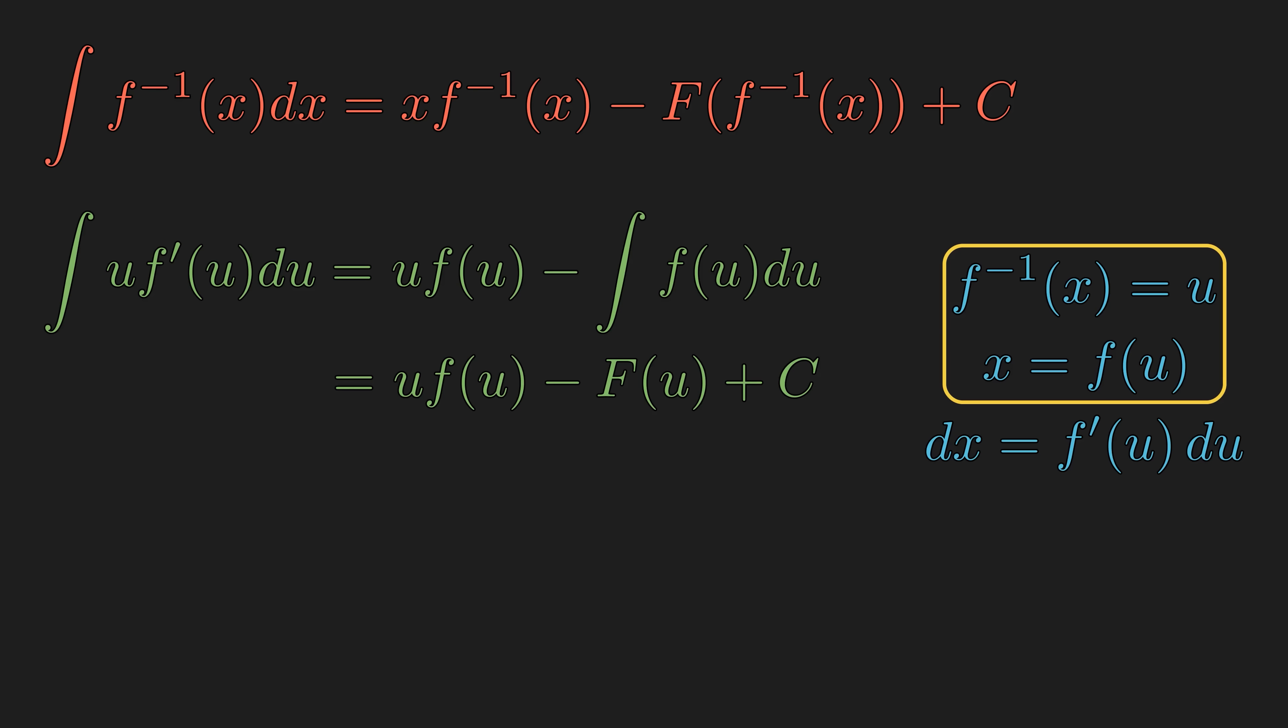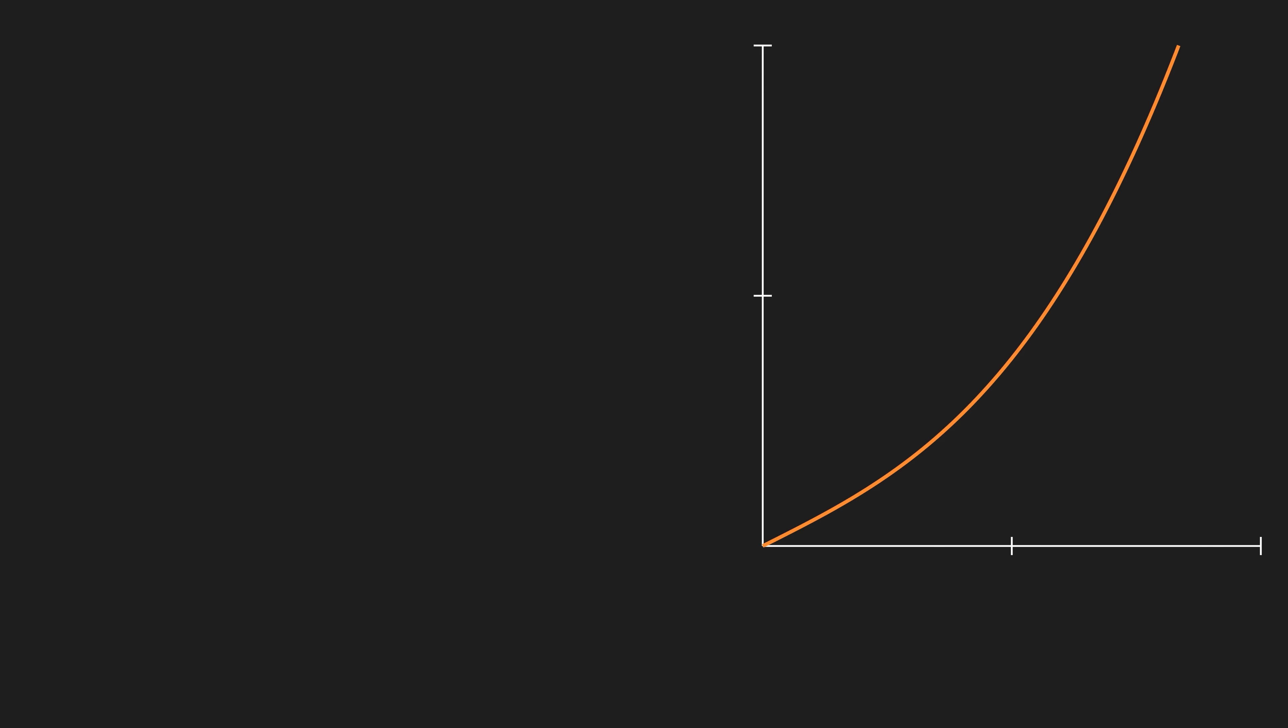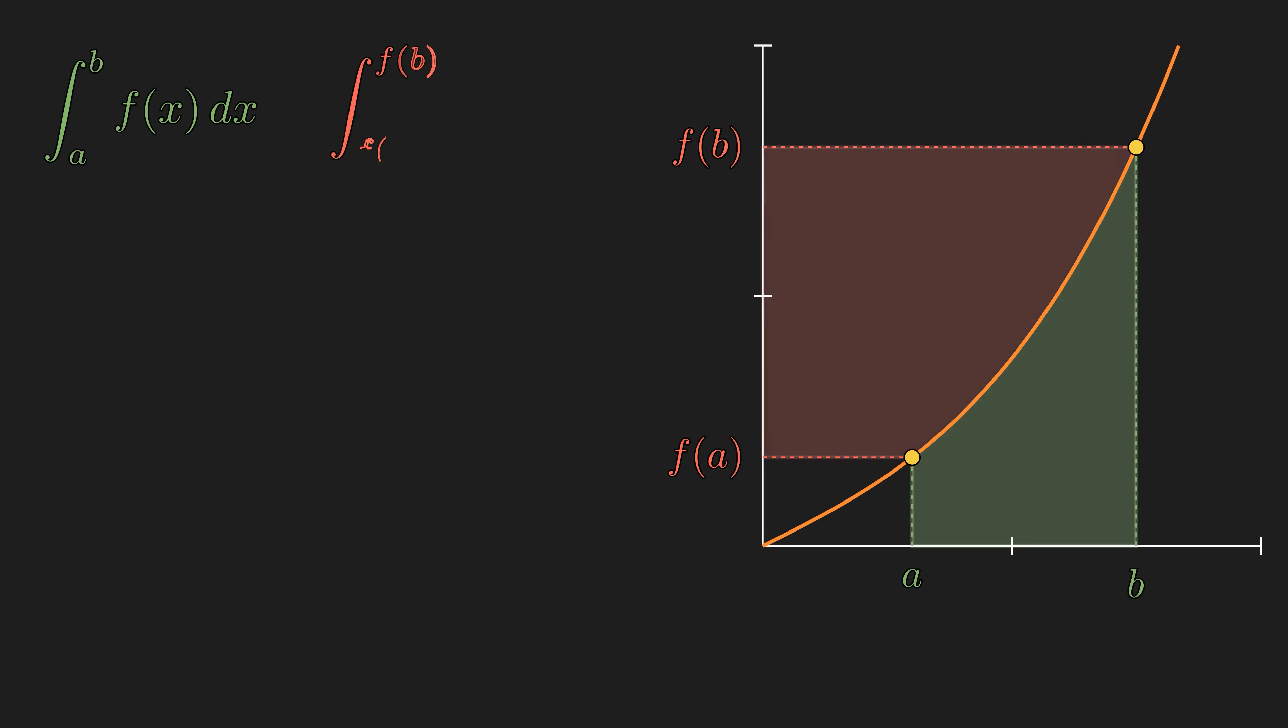We went through a lot of symbol crunching, but what does it actually mean geometrically? Choose any two points a and b in the domain, then we can get f of a and f of b. Then, the integral of f from a to b is the green area, and the integral of f inverse from f of a to f of b is the red area.